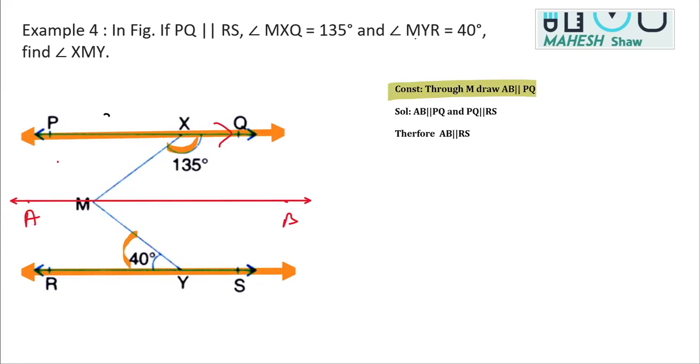Now we can say in the first part, considering the first two lines being parallel, that is PQ parallel to AB, we can clearly see that this is acting as a transversal. Therefore, by co-interior angles, these two angles will be supplementary. So we can say that angle XMP plus the other angle MXQ will be equal to 180 degrees.